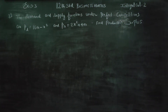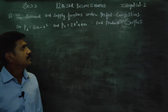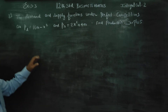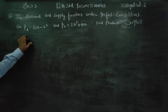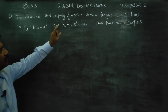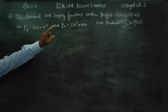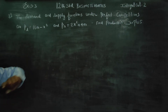Dear 12th standard business math students, the demand and supply functions under perfect competition are given by PD as the demand function and PS as the supply function.